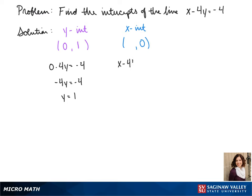For our x-intercept, we plug in a 0 for our y-value. This gives us x equals negative 4, so our x-intercept is negative 4.